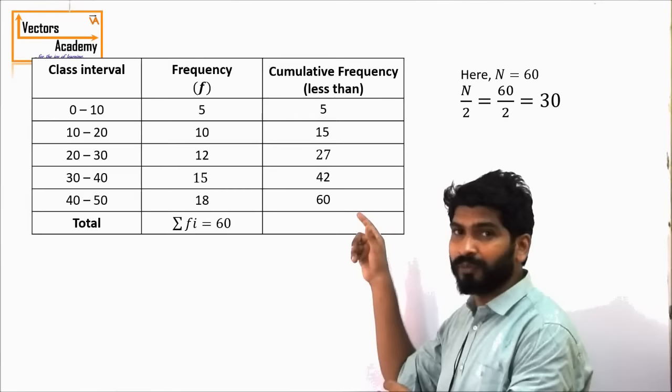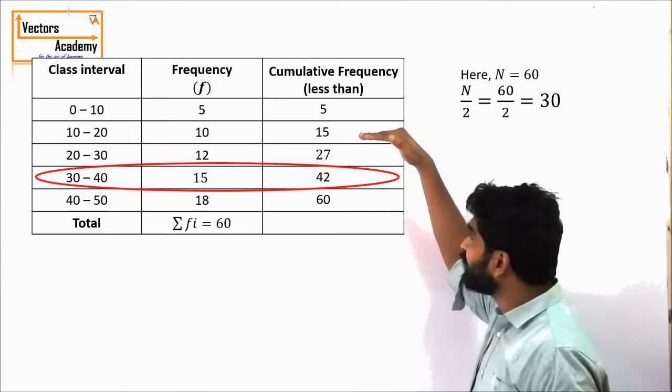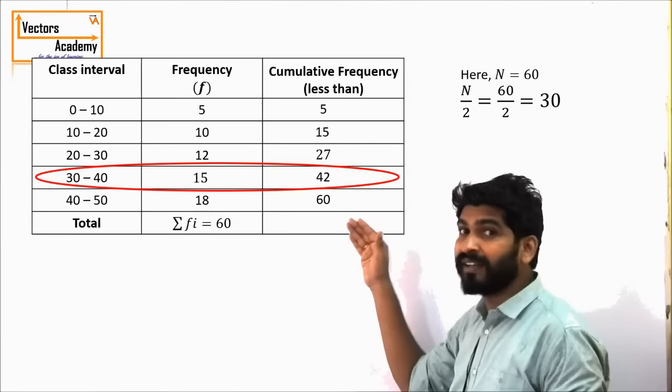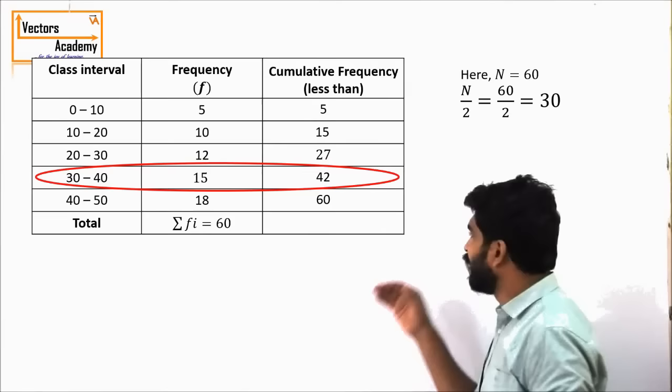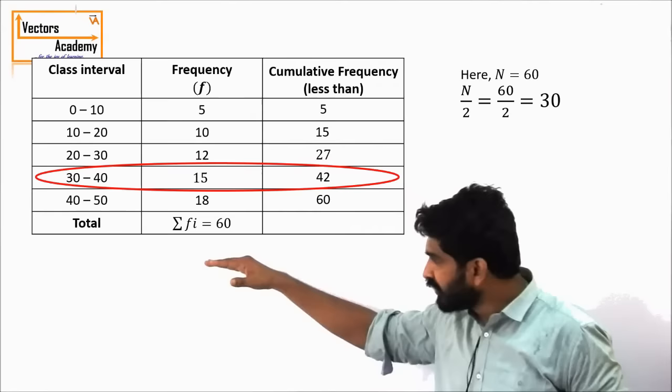In this table, the cumulative frequency crosses 30 in the fourth row. The cumulative frequency for the first row is 5, for the second row is 15, for the third row is 27 — it has not crossed 30 yet. For the next row it is 42, and here it has crossed 30. Hence this class — from 30 to 40 — is taken as the median class.